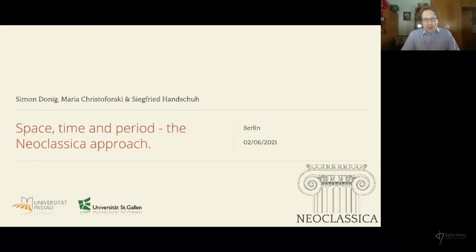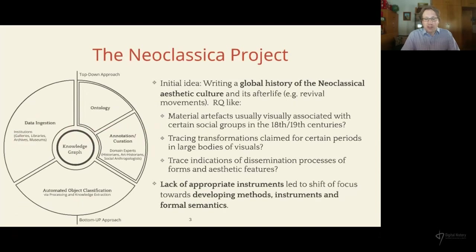Many thanks to the organizers for having us here today with this presentation on Neoclassica's approach to space, period, time, and agents. Neoclassica started out with the idea of writing a global history for an aesthetic culture and its afterlife. We had essentially very historical questions in mind: what kinds of material artifacts are usually visually associated with certain social groups in the 18th and 19th centuries? Can transformations that art history, material culture studies, or design history claim to have happened be traced in large bodies of visuals? Is there a way to trace dissemination processes of forms and features? In Neoclassica, we developed methods and instruments to answer such questions by joining knowledge representation and knowledge discovery methods.